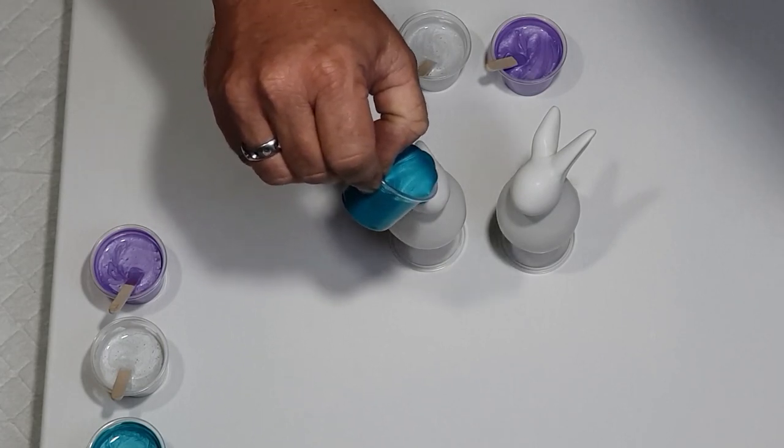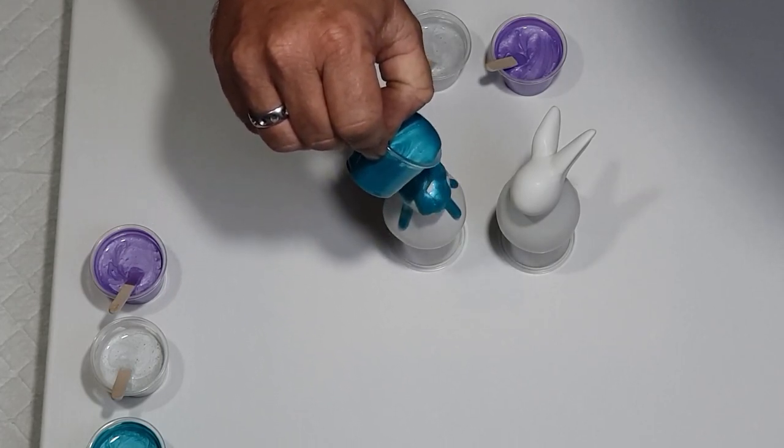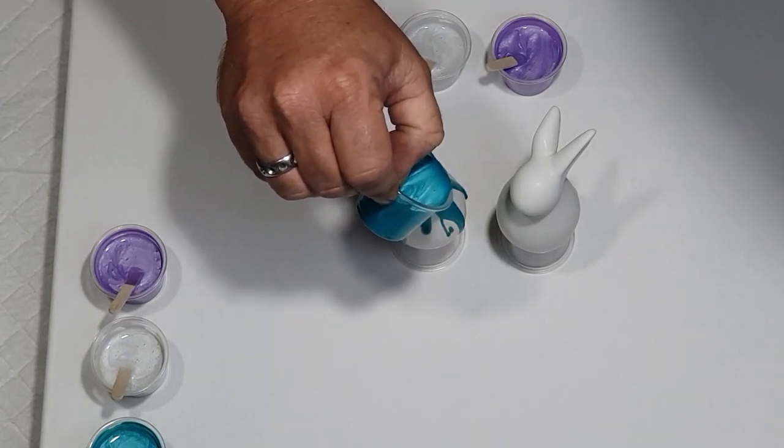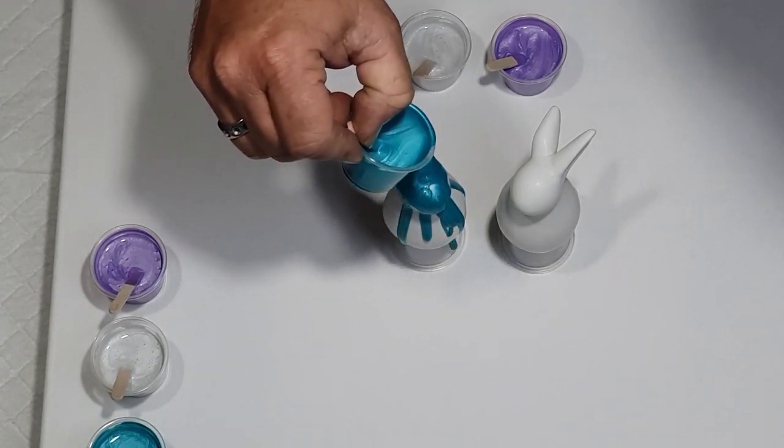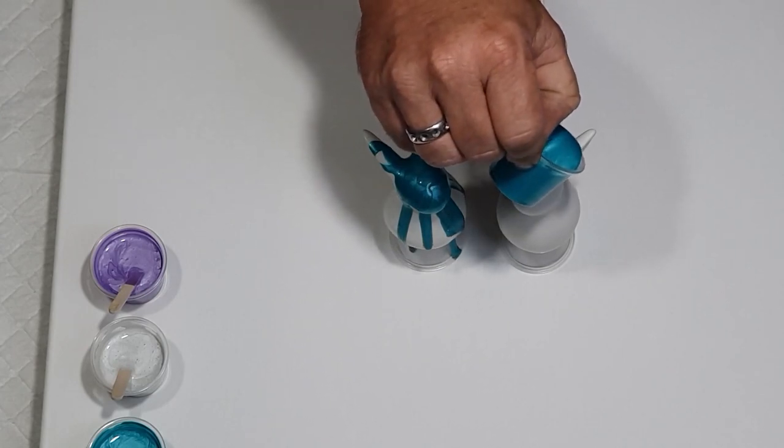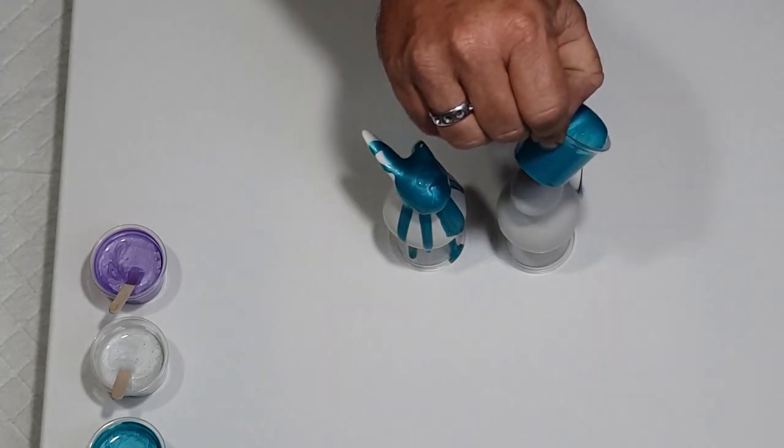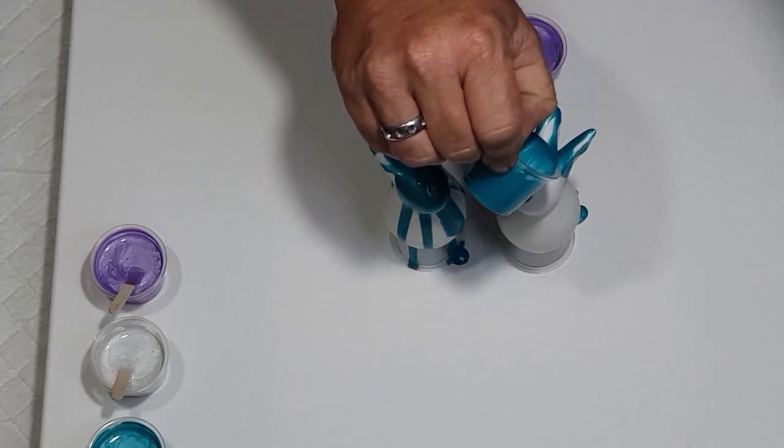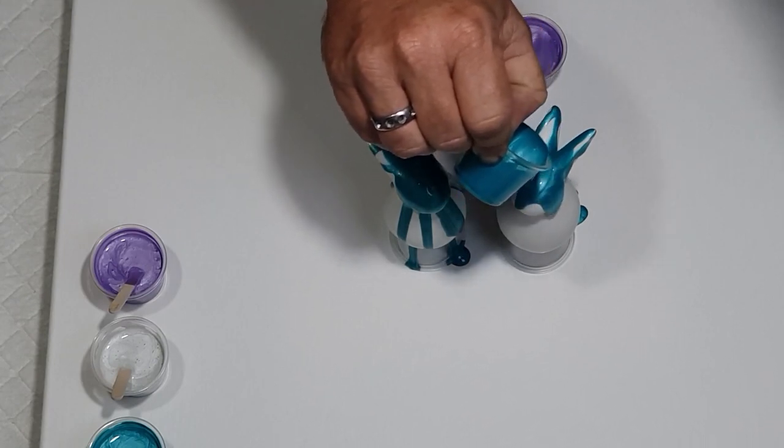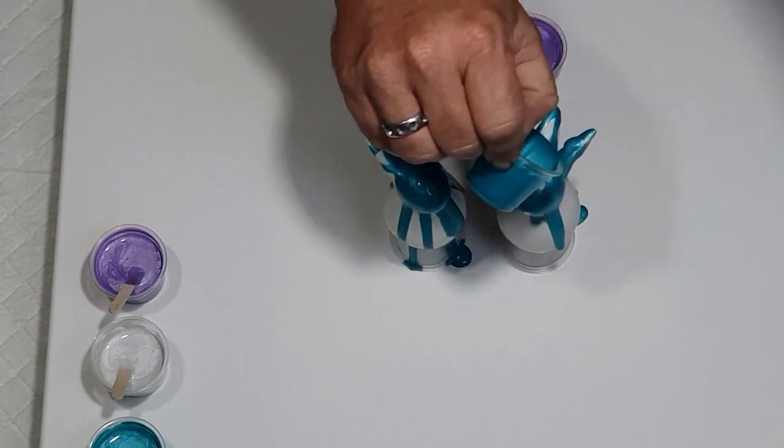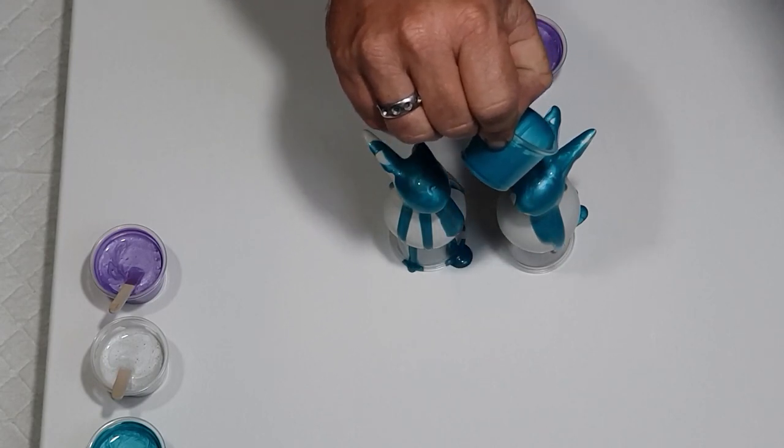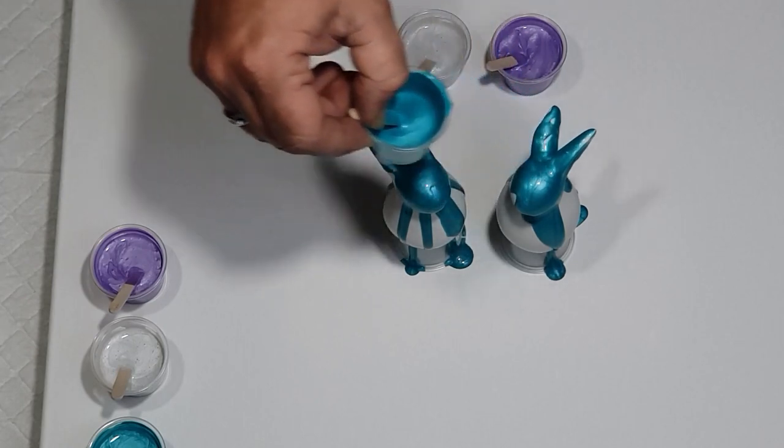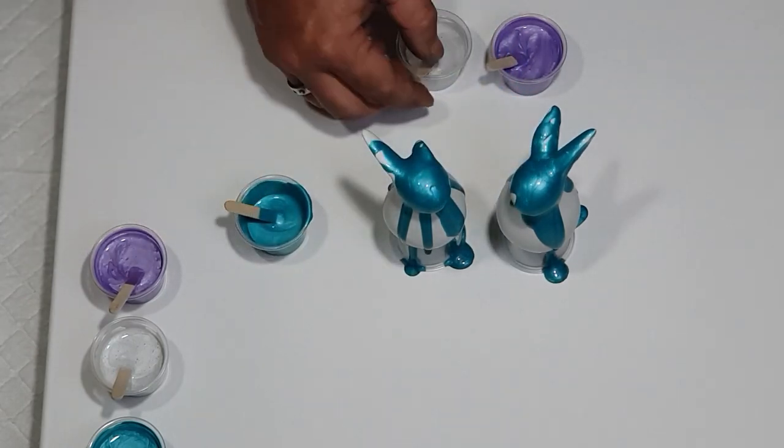All we're going to do is just drizzle it over the top and just let it run down the sides. I'm going to do the same over on this bunny. Always start at the top parts and try to get them covered first. It doesn't matter that at the moment it looks all aquamarine - once you add the other colors it will pour over the top and kind of drip off and create different ones.